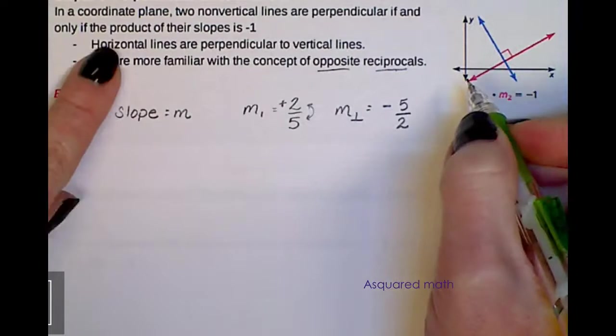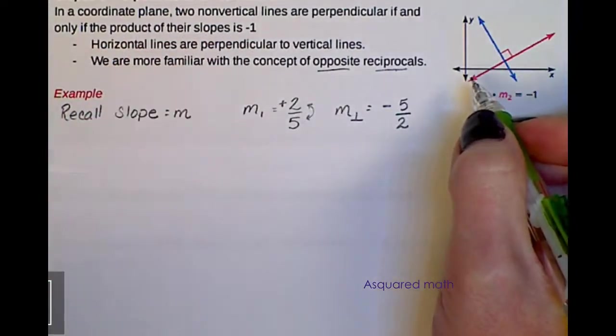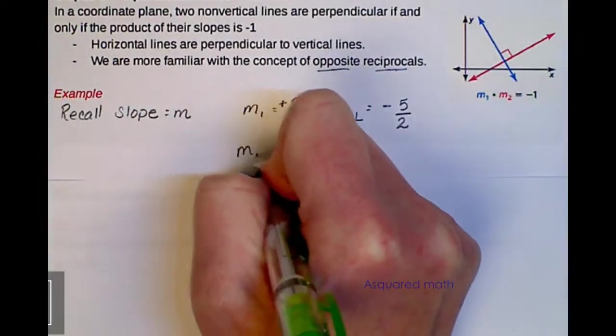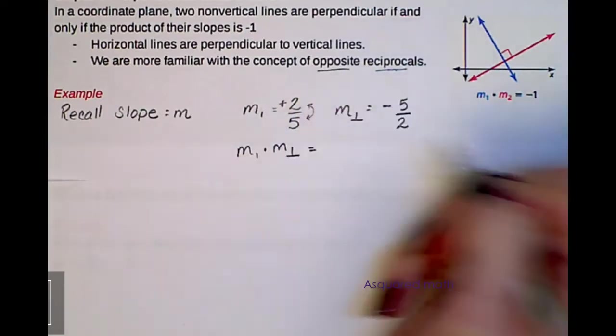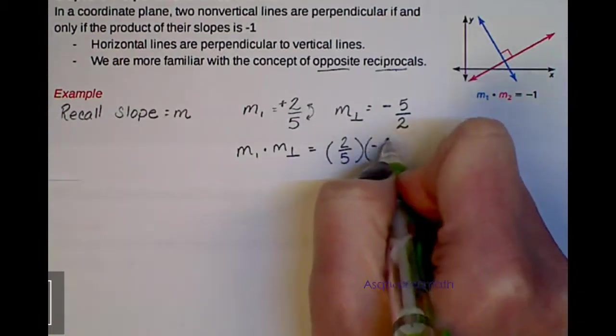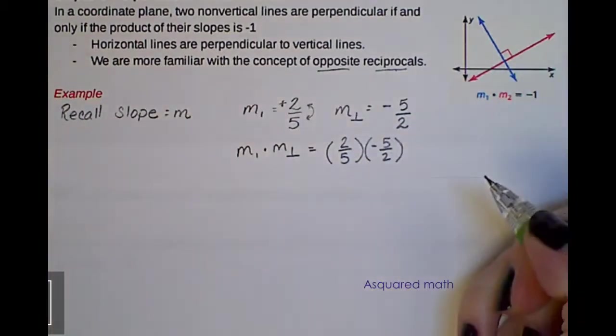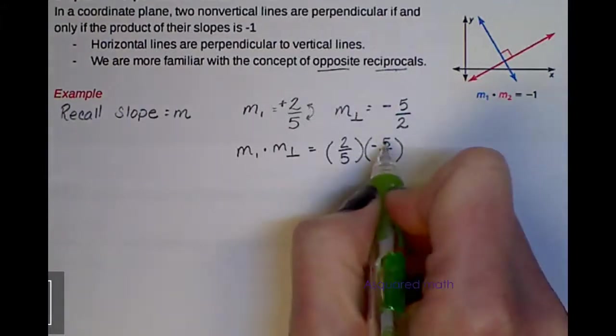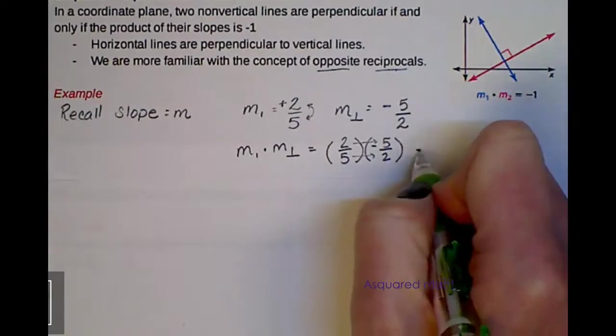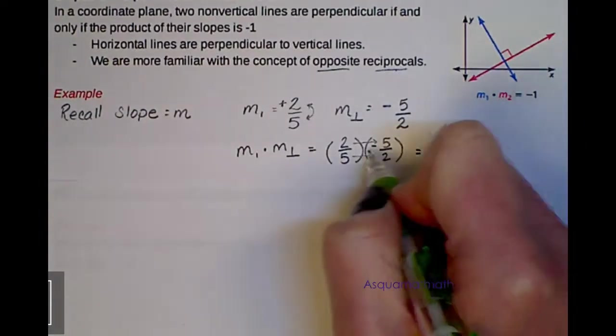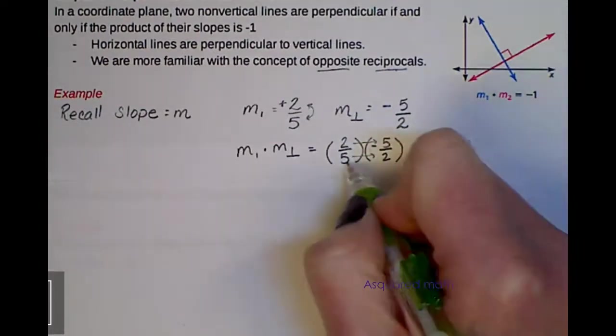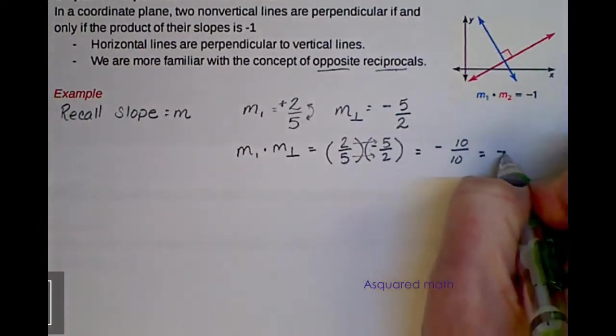So we need to flip-flop our numerator and denominator. So this becomes negative 5 halves. And what they say here for the product of their slopes is negative 1. I'm going to find the product or multiply them. So slope 1 times our slope perpendicular gives us 2 fifths times negative 5 halves. And if you recall, when you're multiplying fractions, you multiply straight across numerator, straight across denominator. So we end up with negative times positive, which gives us negative. 2 times 5 is 10, divided by 5 times 2, which is 10, or negative 1.